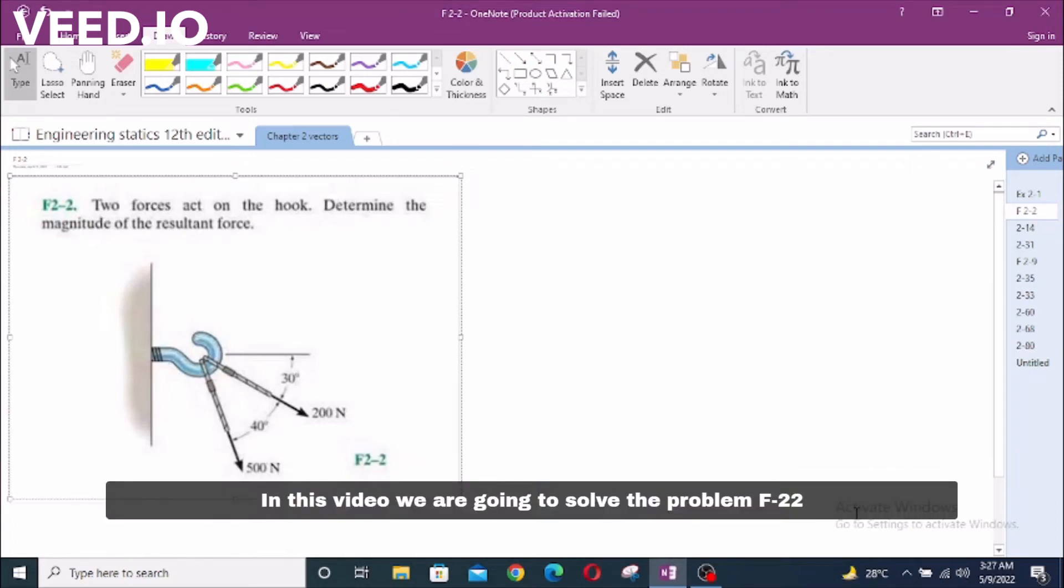In this video, we are going to solve problem F2-2 from R.C. Hebeller engineering statics 12th edition. The problem says two forces act on the hook, determine the magnitude of the resultant force.